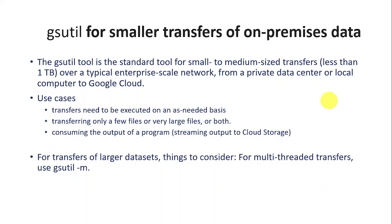The first tool is gsutil, which is mainly for smaller transfers from on-premises data. When we say smaller transfers, it means anything less than one terabyte. You might think one terabyte is huge data, but compared to petabytes, it's relatively small. For a big organization, one terabyte of data is not a very large dataset. In those situations, we can use gsutil, which is a standard command line tool.